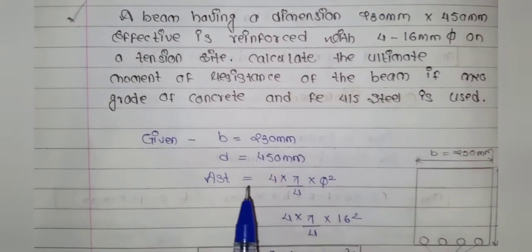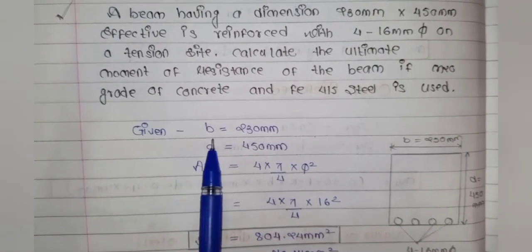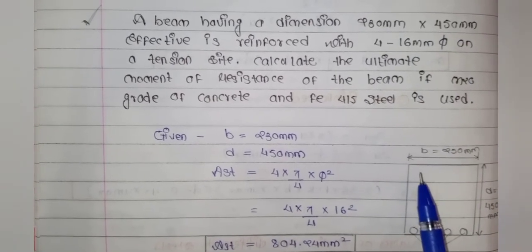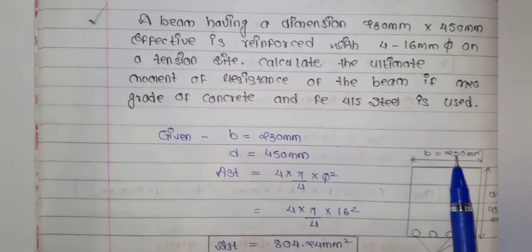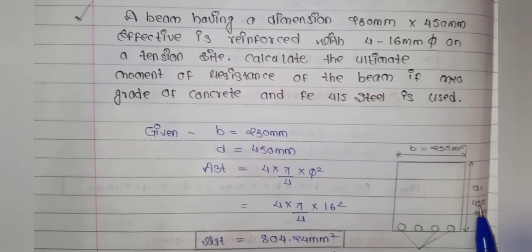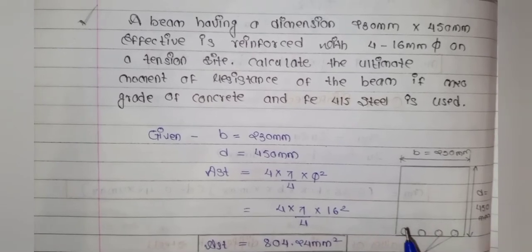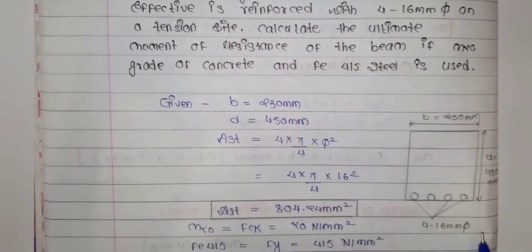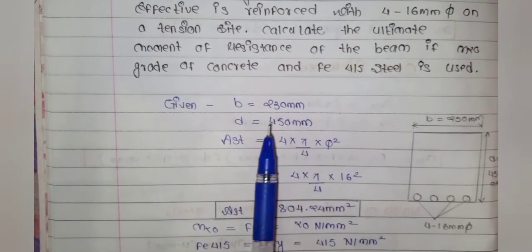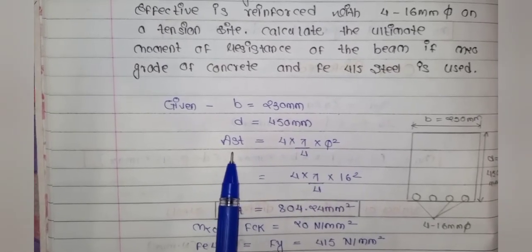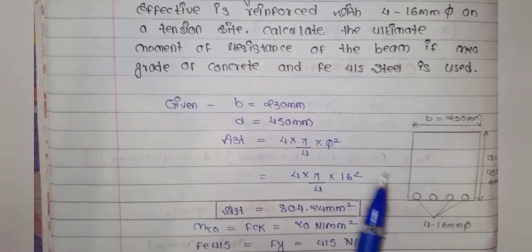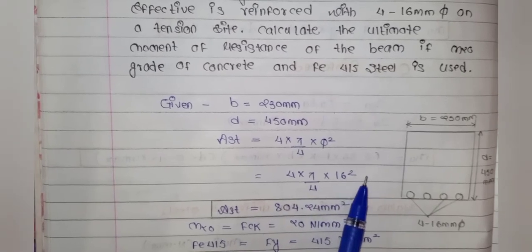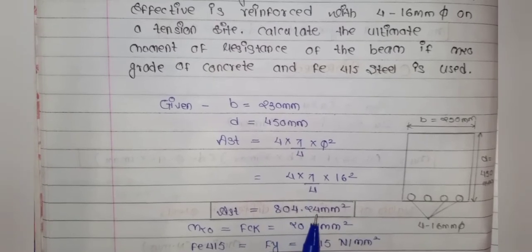Given data: B = 230 mm, D = 450 mm (effective depth). Area of steel AST = 4 numbers of 16 mm diameter = 4 × (π/4) × 16² = 804.24 mm².